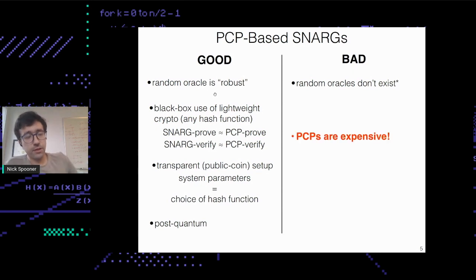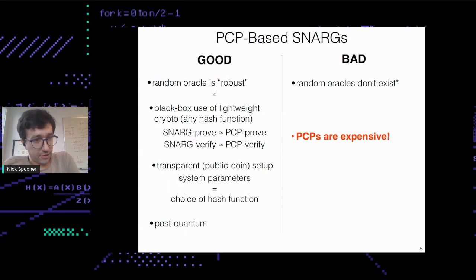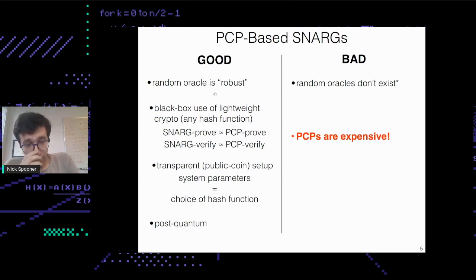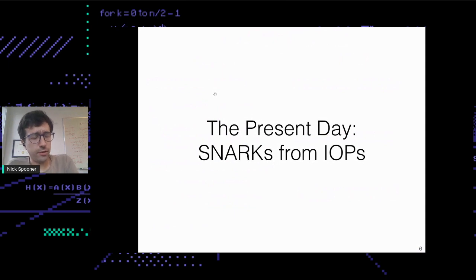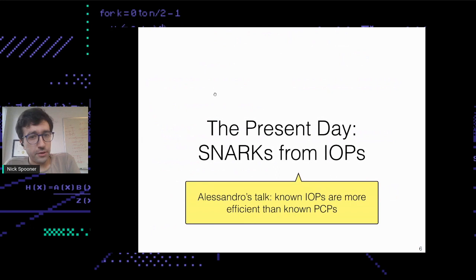The main problem is that PCPs are really expensive. As Ali said, they've gone down from being galactic algorithms to being prohibitively expensive — like tens of megabytes for the resulting SNARK. So what do we do? Ali already gave us a hint: we're going to try and build SNARKs from IOPs instead, because known IOPs are more efficient than known PCPs.